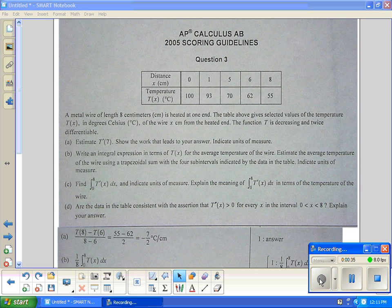Estimate T'(7). Show work that leads to the answer indicating units of measure. We're going to estimate the rate of change at 7 centimeters. The best we can do when we have a table is to do the average rate of change. So just use 8 and 6. So it's (55 - 62) / 2 = -7/2 degrees Celsius per centimeter.